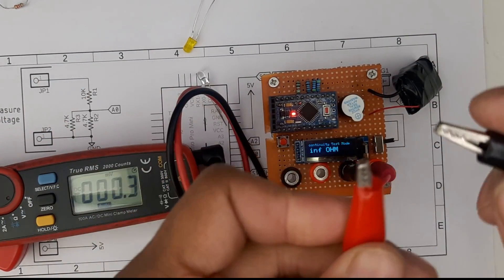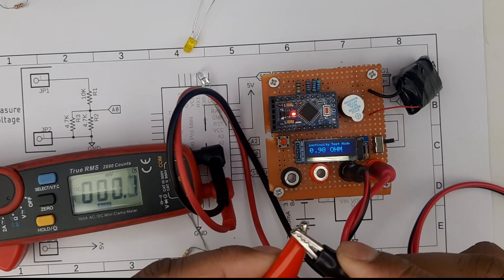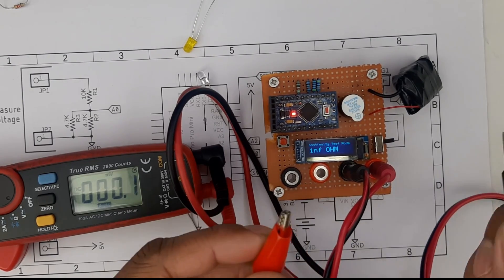This is the continuity test mode. If I short this you can hear the buzzer. It's also showing the wire resistance.